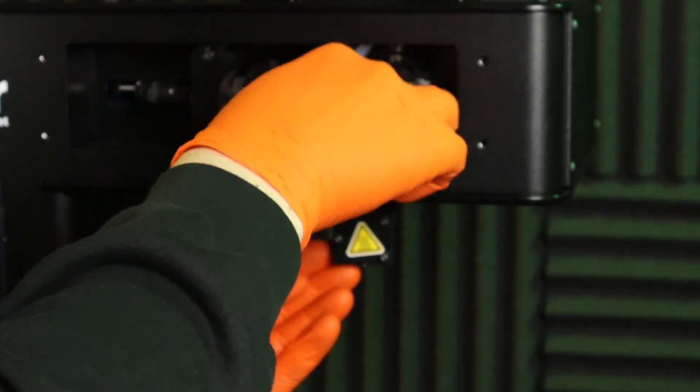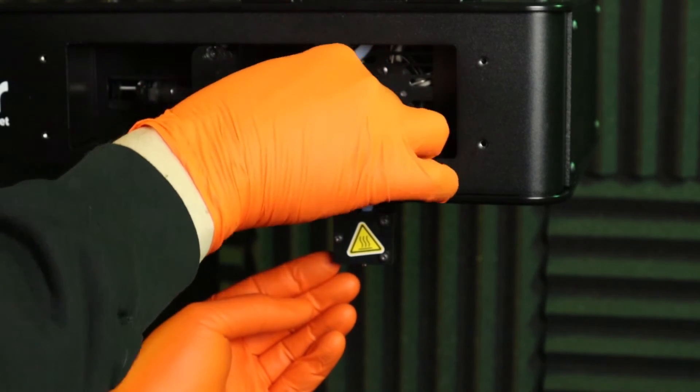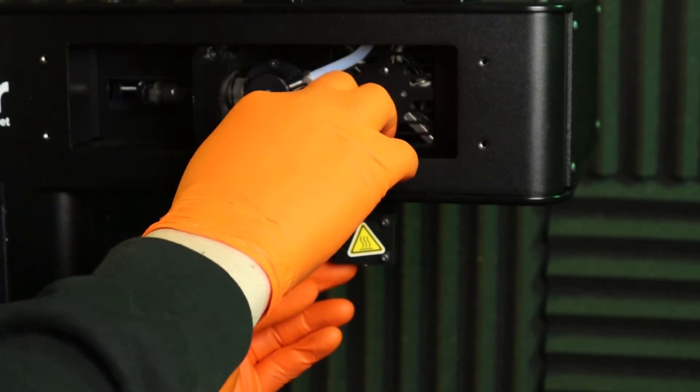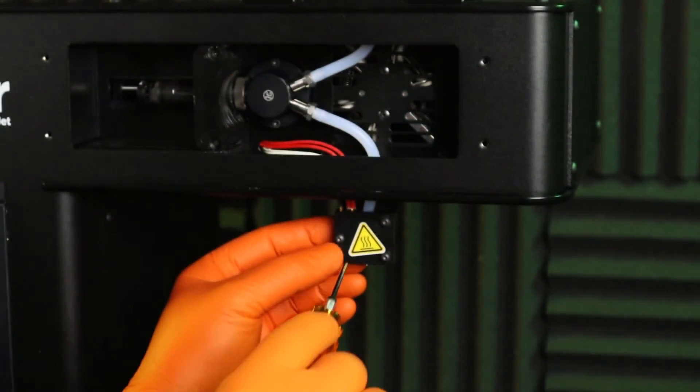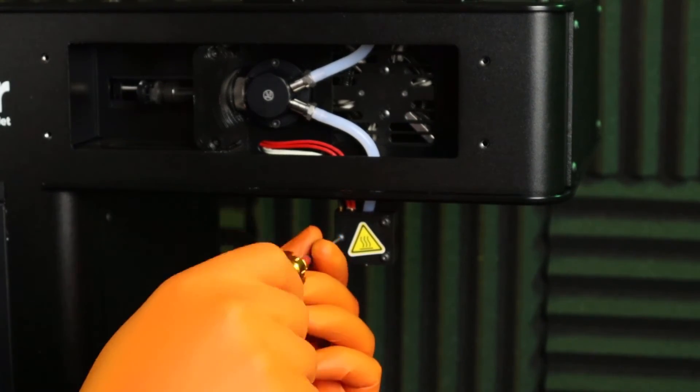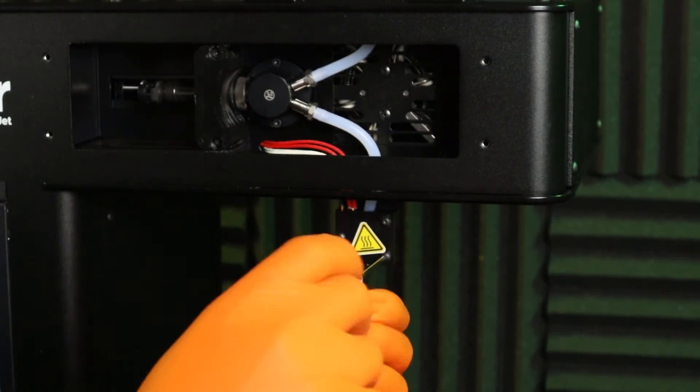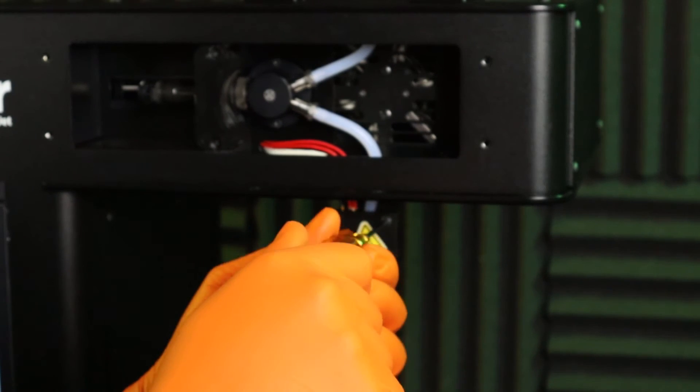If needed, you can adjust the placement of the heater and thermistor wires by pulling or pushing from within the pump chamber. Insert the final screw and ensure all three are hand tight until you feel resistance. Do not over tighten.